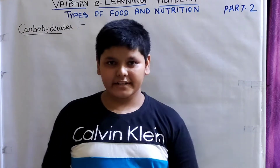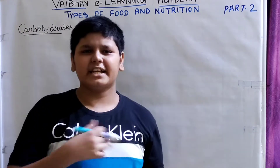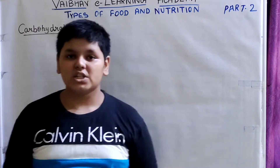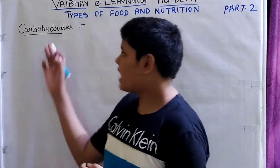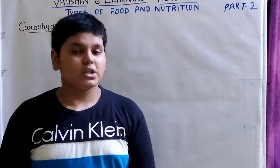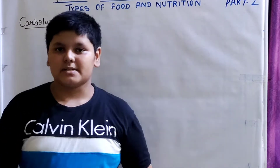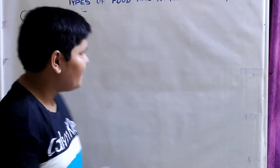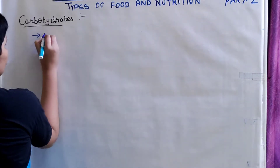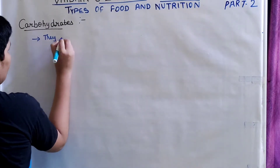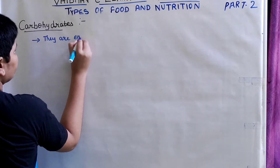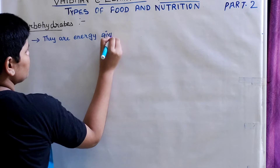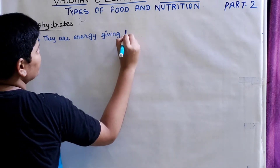So now, we will be learning about each and every nutrient of the food in detail. What is the first one? We are going to start with carbohydrates. What are carbohydrates? As discussed before, carbohydrates are energy giving foods.